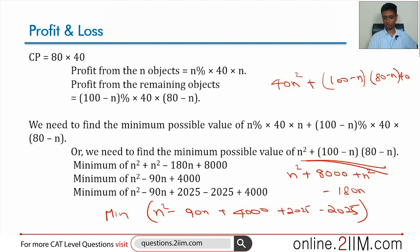Think about why we're doing plus 2025 minus 2025. We're trying to write this quadratic expression as a perfect square plus an adjusting term: x plus a whole squared.